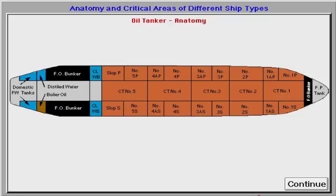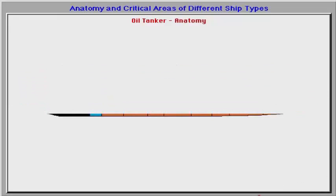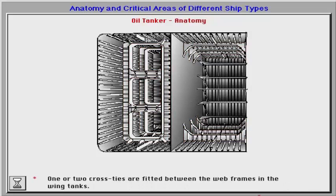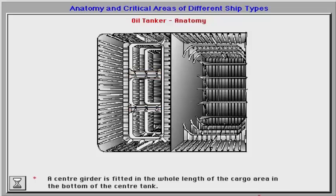The structural arrangements of a traditional single skin oil tanker include transverse web frames crossing longitudinally different deck, bottom, sides and longitudinal bulkheads. One or two cross ties are fitted between the web frames in the wing tanks. A centre girder is fitted in the whole length of the cargo area in the bottom of the centre tank. Oil-tight transverse bulkheads are vertically stiffened and fitted with horizontal stringers.